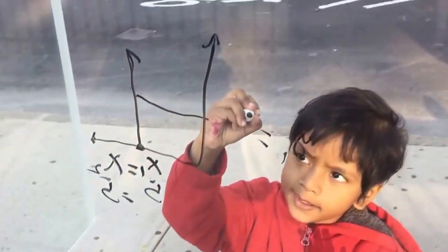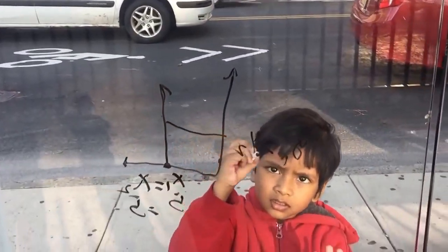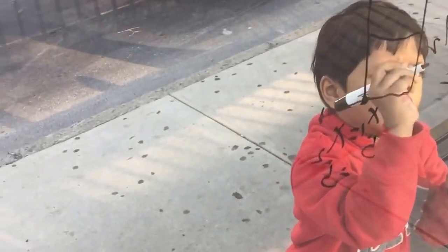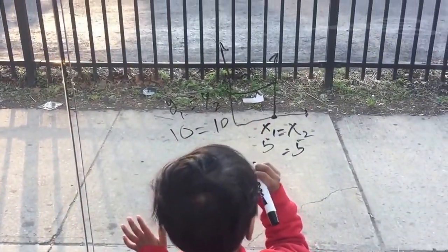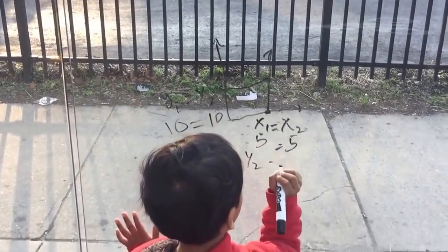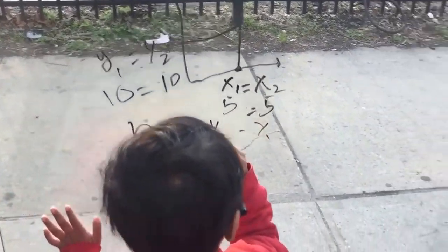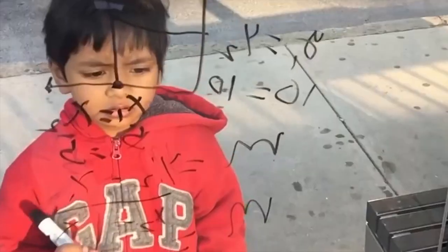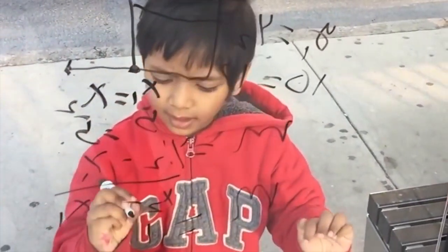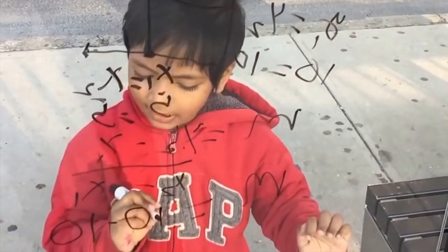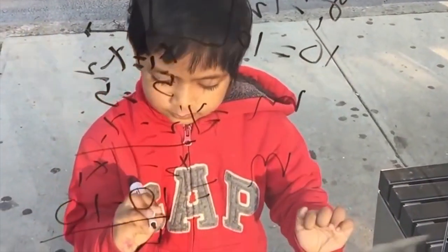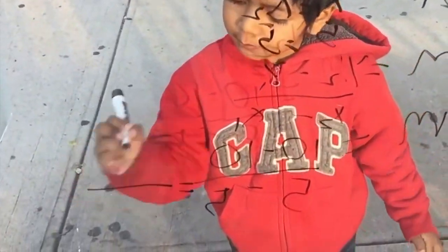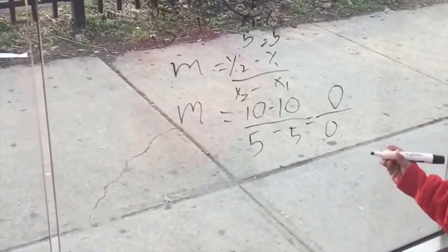So now let's say we have this point on the y: y1 equals y2, so let's say the y's are equal to 10. So to find the slope, we get y2 minus y1 over x2 minus x1. Now we just plug in, because that is 10 minus 10 over 5 minus 5, and that's equal to 0 over 0.